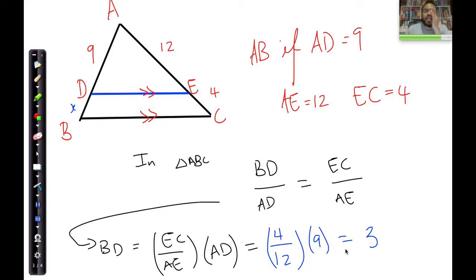Now you may say, you've made a terrible mistake because what they really want is AB, and AB is that entire length over there. Well, I've calculated that BD is 3, and therefore AB is equal to 12 units because 9 plus 3 gives me 12.